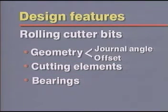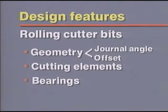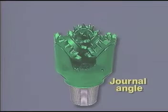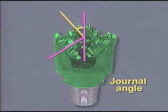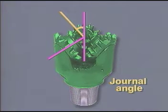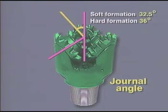The geometric design features that determine cutting action are the journal angle and the offset. The journal angle, by definition, is the angle formed by the intersection of a line perpendicular to the axis or center line of the journal, and the center line of the bit. In general, soft formation bits have smaller journal angles than hard formation bits.